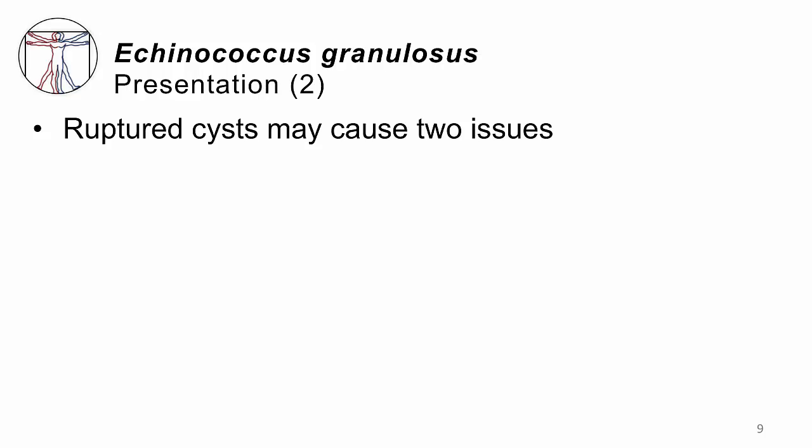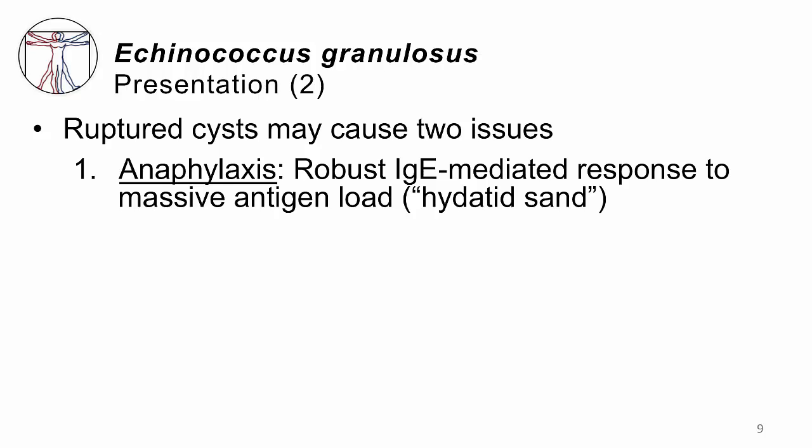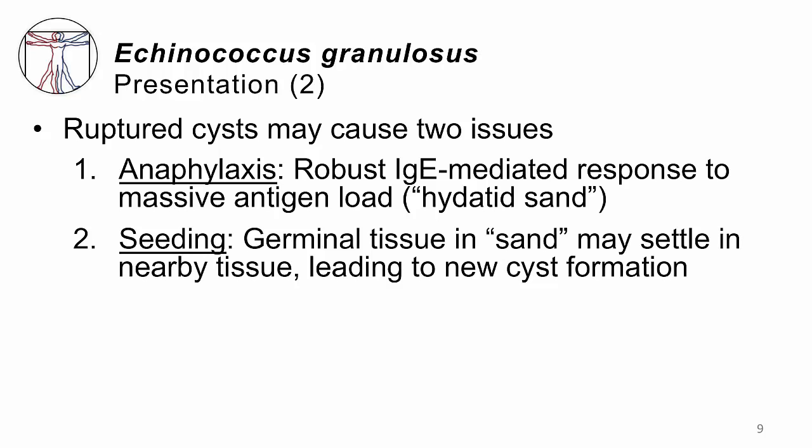There's the cyst and what it does when it's intact, but those cysts are fragile — they may actually pop. When they rupture, they can cause one of two issues. First, the patient may have anaphylaxis — that's the sudden, robust, immediate-type hypersensitivity response to a huge load of antigens, what we call the hydatid sand, or the debris that sits in the bottom of these hydatid cysts. If that is suddenly exposed to the host immune system, there may be a terrible anaphylactic response. Second, if the patient gets through that process, the germinal tissue in the sand may actually settle out in other tissues and start to grow into new cysts. This is what we call seeding of a body compartment — for example, the peritoneal cavity — with new, fresh cysts.